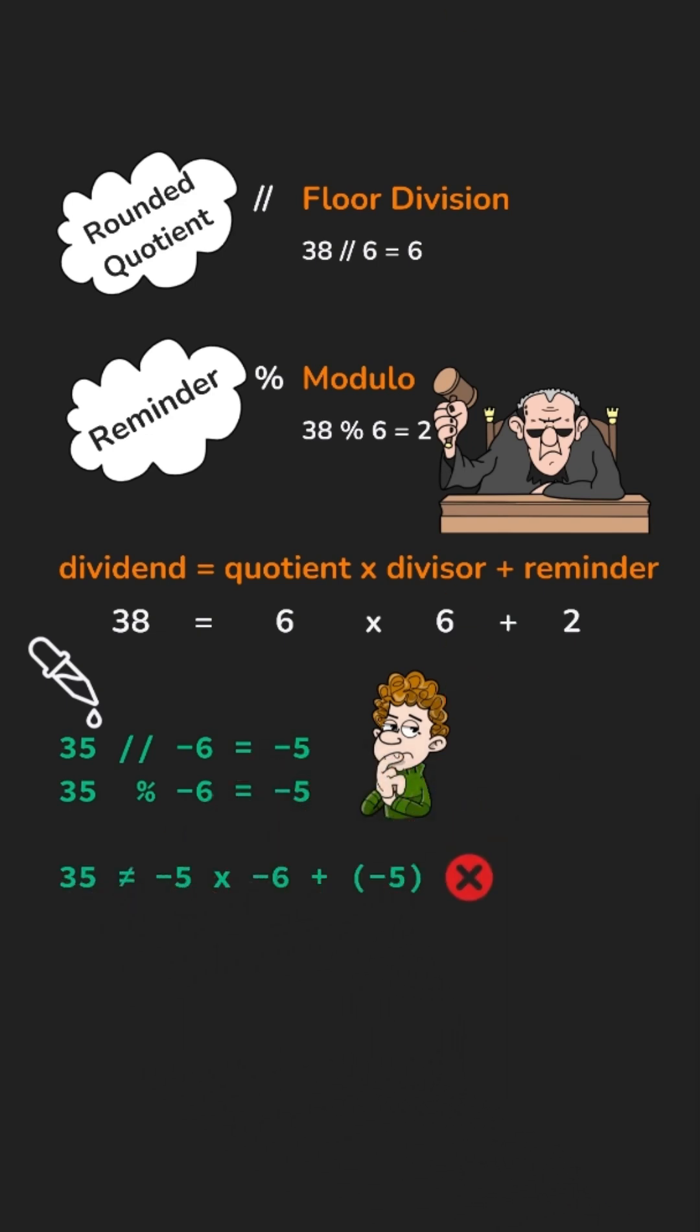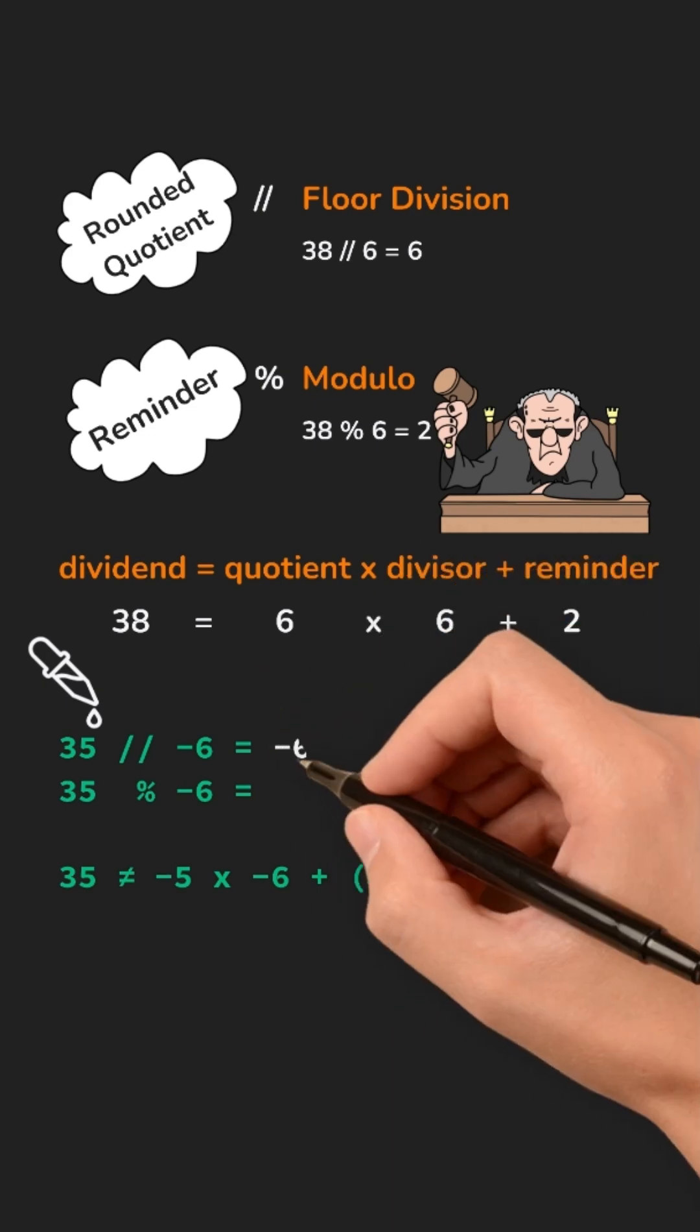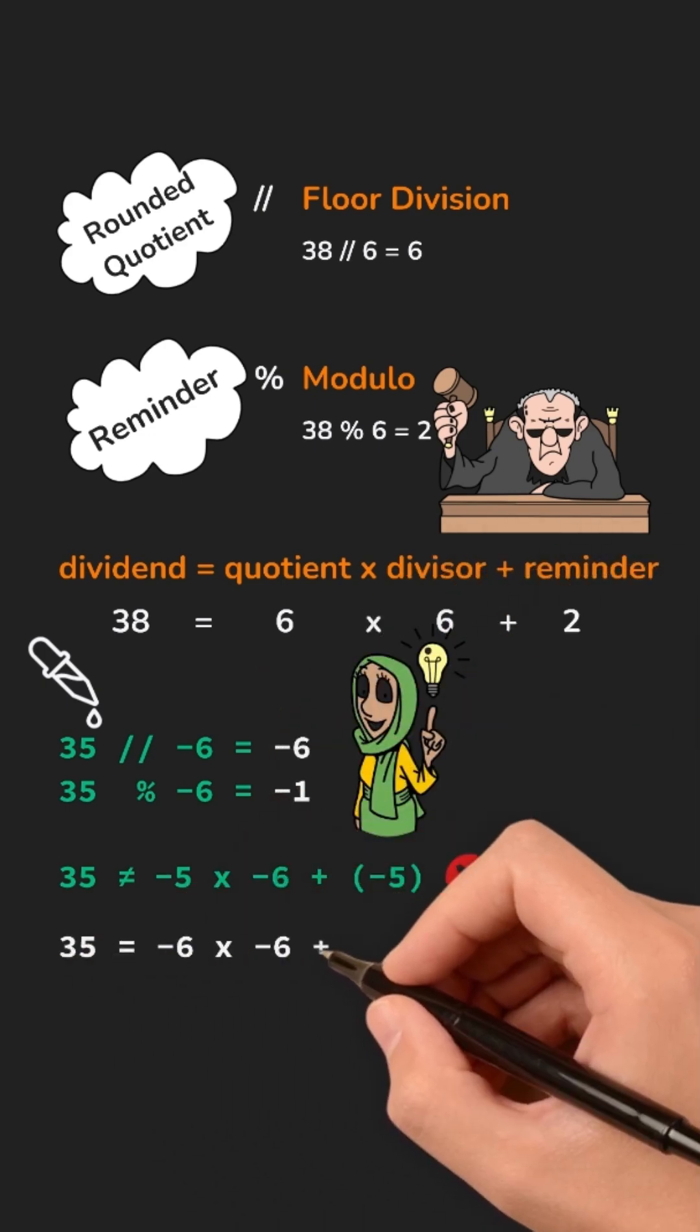Instead, Python gives you -6 as quotient and -1 as remainder. -6 times -6 is 36, and 36 plus -1 equals 35. Perfect.